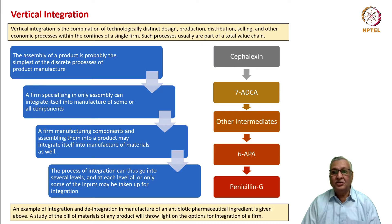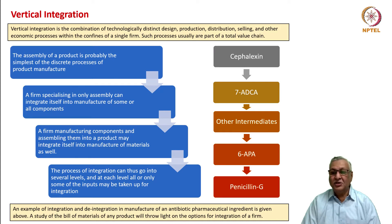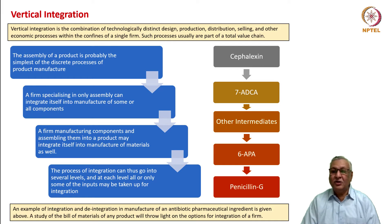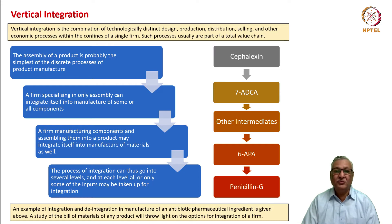An example of integration and de-integration in the manufacture of an active pharmaceutical ingredient called Sufflexin is illustrated. Sufflexin is an antibiotic product which is orally administered. It requires 7-ADCA as well as other intermediates. But 7-ADCA itself requires 6-APA, which again requires penicillin gene. It is therefore open to the manufacturer of Sufflexin to manufacture 7-ADCA, the intermediates, 6-APA, or the downstream penicillin gene. This illustrates that the entire material value chain and product value chain are interlinked in terms of integration possibilities.